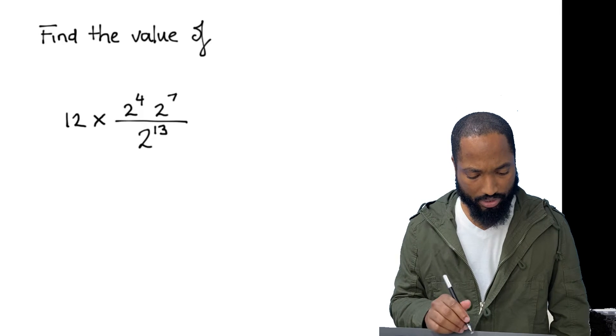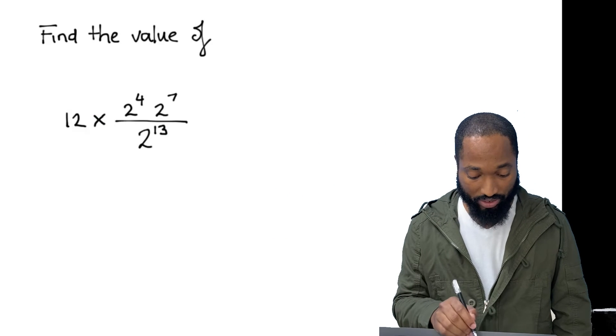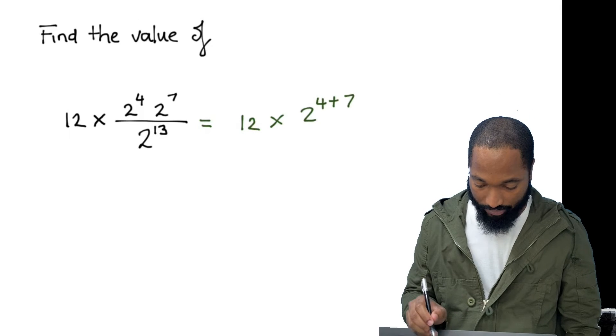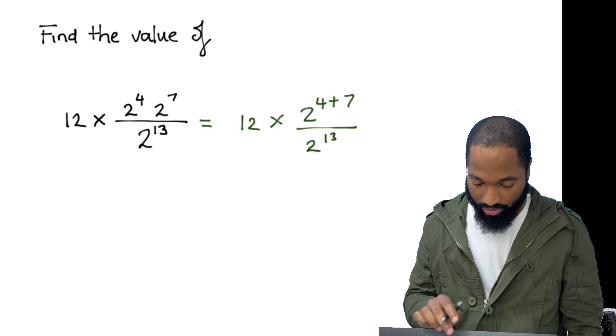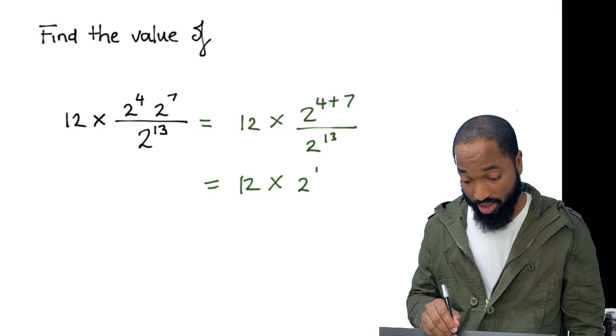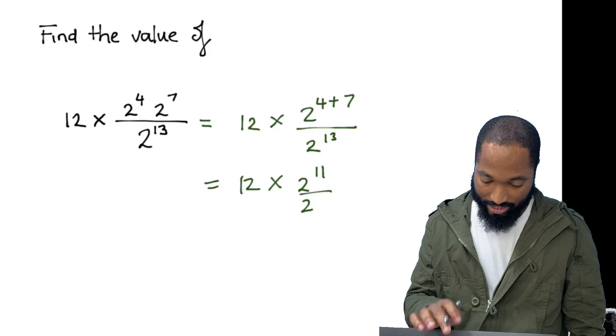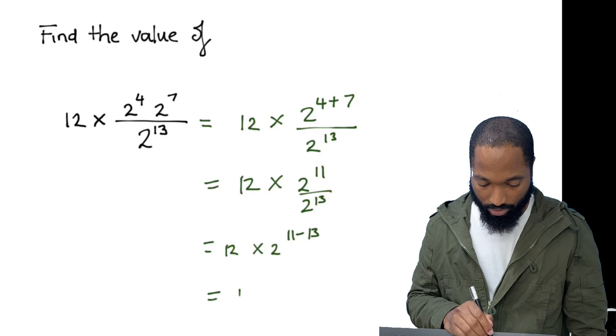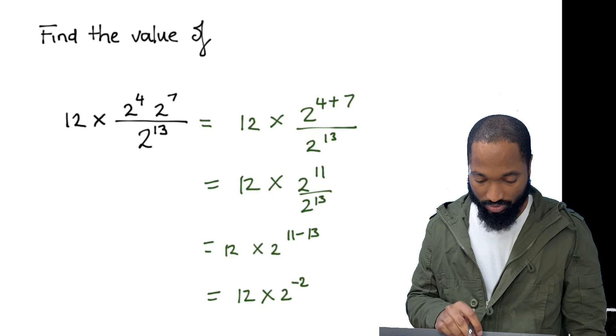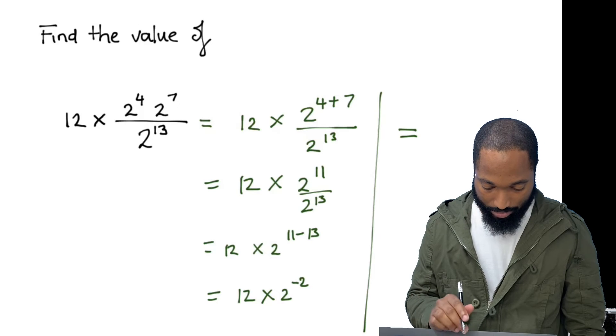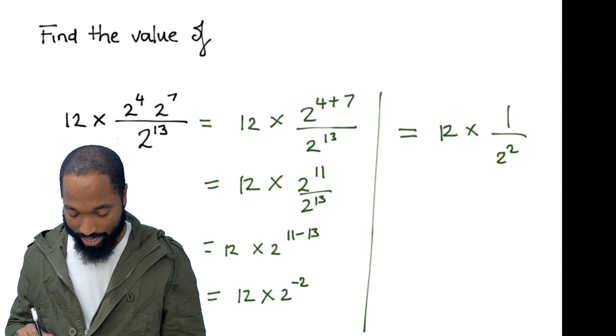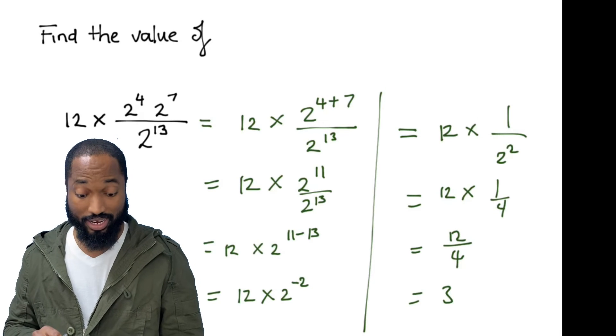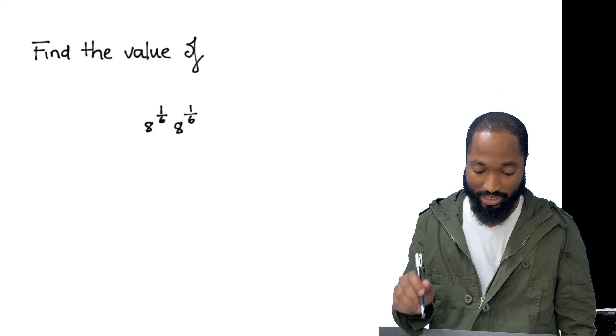Next question. 12 times. Okay, they said find the value. Last time they said simplify. This time we need to actually find the actual value. So this is the same as 12 times 2 by 4 plus 7 all over 2 to the power of 13. This is the same as 12 times 2 to the power of 11 divided by 2 to the power of 13. This is the same as 12 times 2 to the power of 11 minus 13. 12 times 2 to the power of negative 2. Let's come back up here to finish off this thing. 12 multiplied by 1 over 2 squared, which is the same as 12 multiplied by a quarter, which is the same as 12 divided by 4, which is the same as 3. You all got that answer? I hope you paused the video and then do any question and not just waiting for me to finish it.